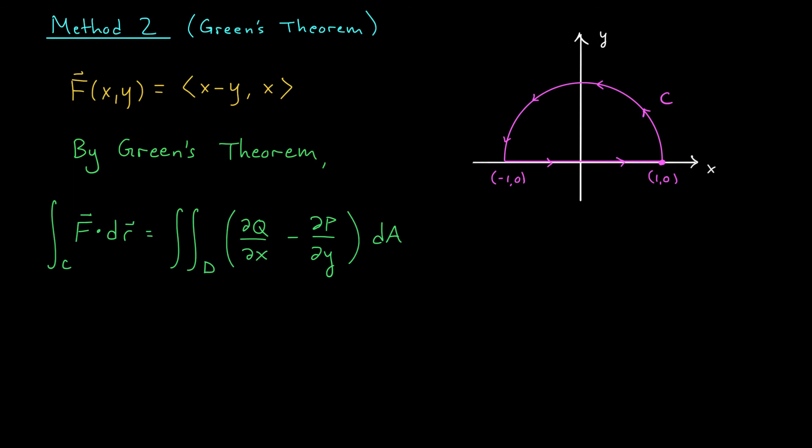Notice that the curve we're working with, C, is simple. It doesn't intersect itself except at the end point. It's closed. The starting point and ending point are the same. It's piecewise smooth. It's made up of two smooth curves joined together. And it's positively oriented. If we imagine a little man walking along this curve in the direction of the arrows, the interior of the region, which maybe we'll call D, is always to his left.